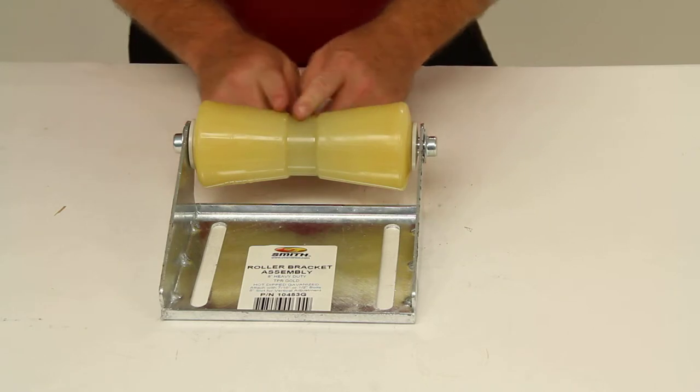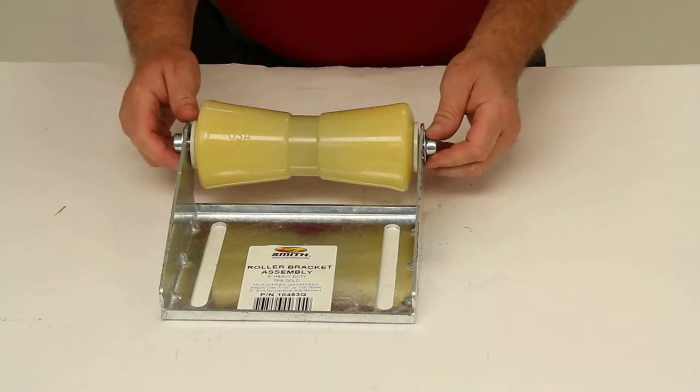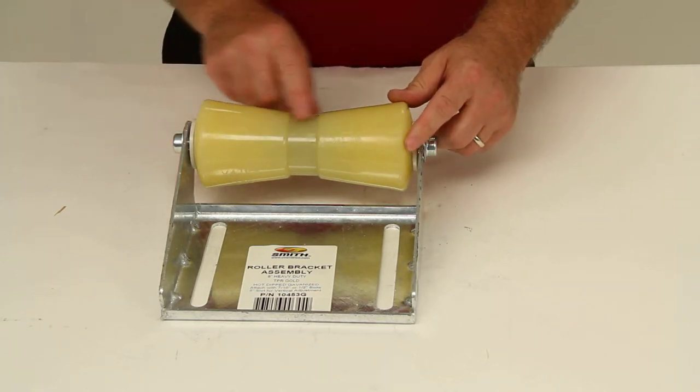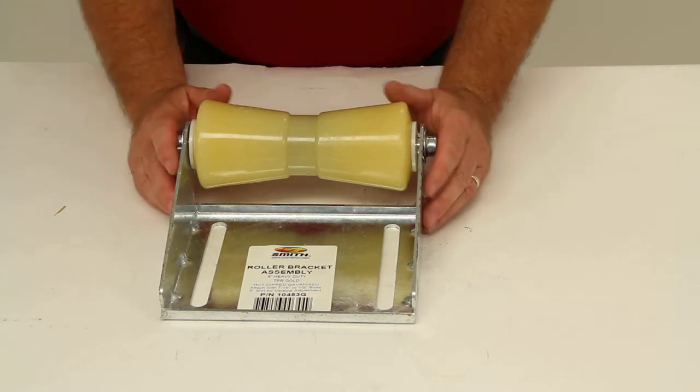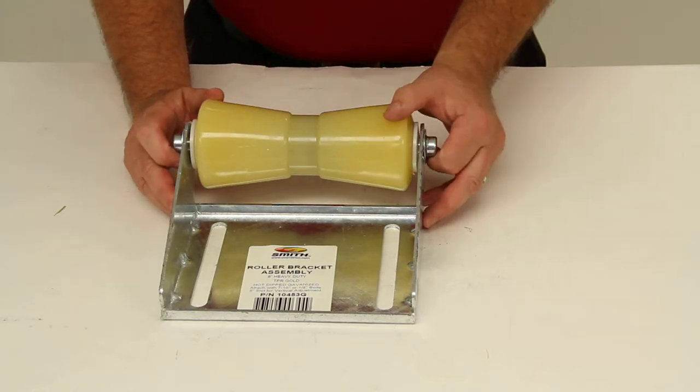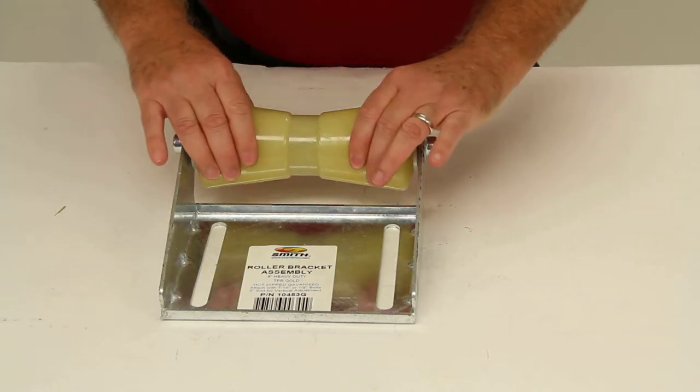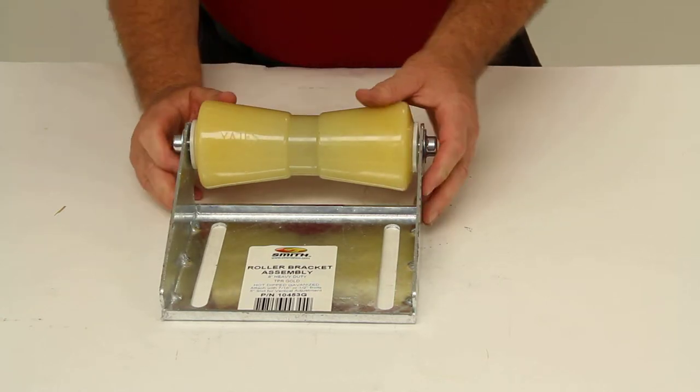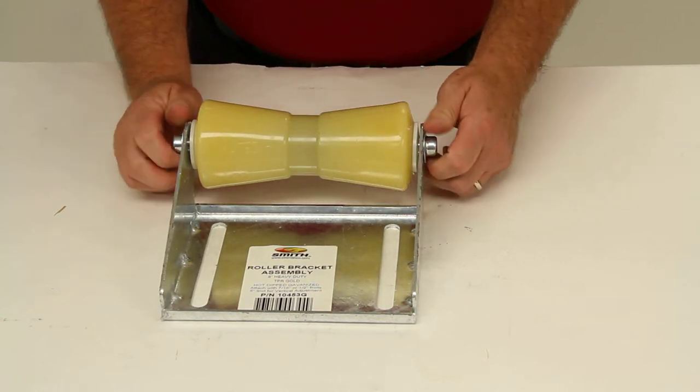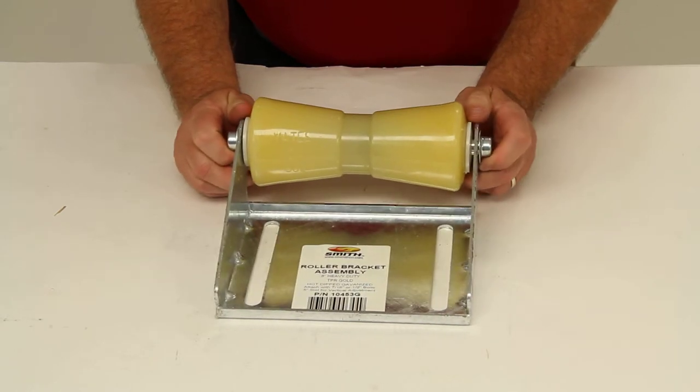The roller itself is a yellow TPR roller, which stands for thermoplasticized rubber. This will deliver superior long-lasting performance. The TPR material is non-marking, stronger than rubber and softer than polyurethane. This part is made in the USA.